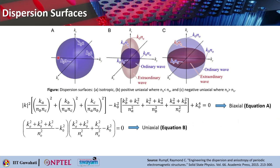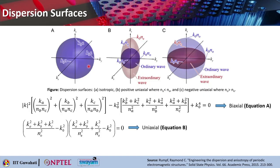For an isotropic medium, the refractive index is the same along kx, ky, and kz, so the dispersion surface is a sphere. The equation is simply kx² + ky² + kz² = (k₀n)². That is the equation for a sphere.